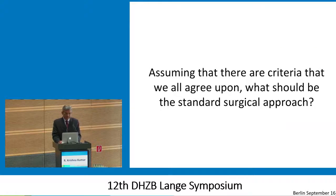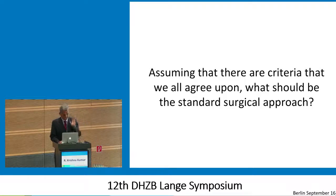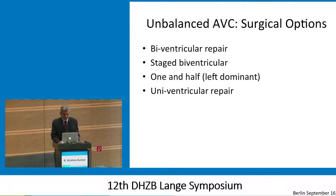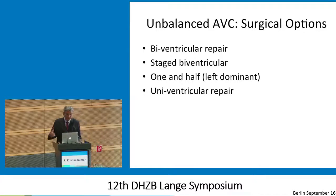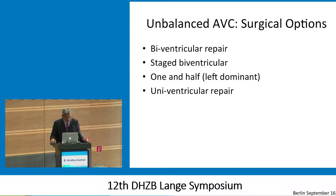Assuming there are criteria that we all agree upon — let's just assume we understood what it is — we have to ask the next question: what should be the standard surgical approach? You've heard these approaches from our speakers: biventricular repair, staged biventricular repair, one-and-a-half ventricular repair, and univentricular. And you also understood that there is really no consensus. There is very clear lack of uniformity.